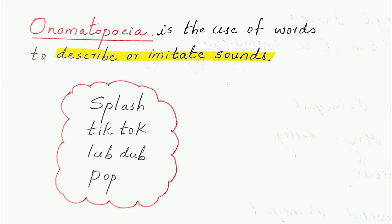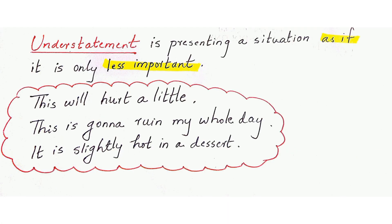The next figure of speech is onomatopoeia, where we use words that describe or imitate sounds. For example, 'splash' — the sound of water splashing and the word we use is 'splash,' it sounds the same. Same way: 'crash,' 'tick tock,' 'pop' as in popcorn. These words that imitate sounds are called onomatopoeic words.